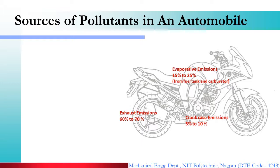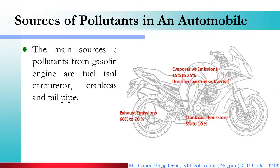In an automobile — it may be a car, a truck, a bus, a small two-wheeler, or a motorcycle — there are a number of sources of pollutants. The main sources of pollutants from a gasoline or petrol engine are the fuel tank, carburetor, crankcase, and tailpipe.